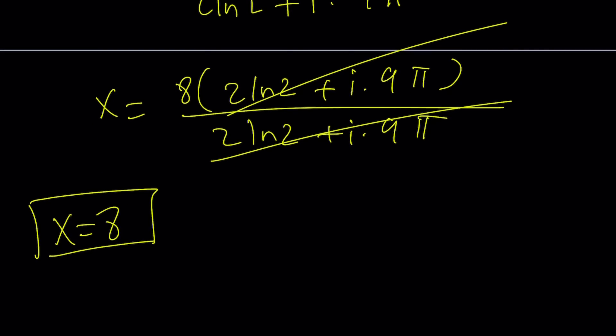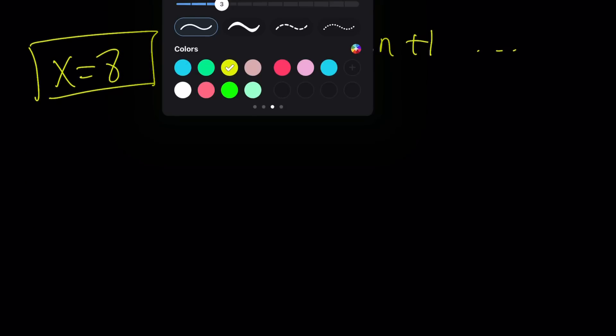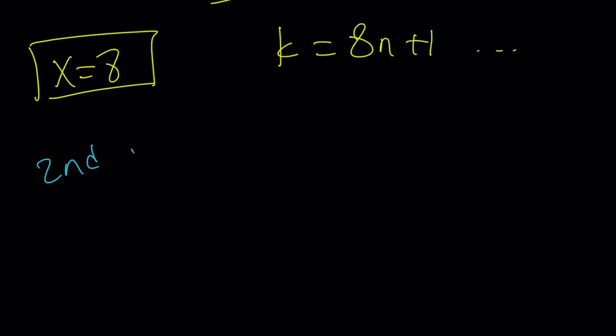In general, let me tell you, if you just pick k = 8n + 1, the same thing is going to happen. Let's talk about the second method real quick. This brings us to the second approach.